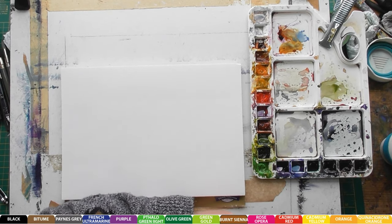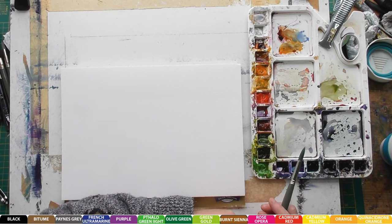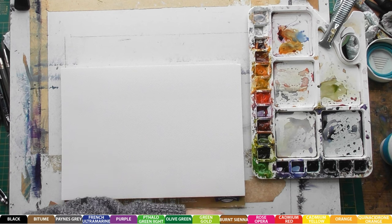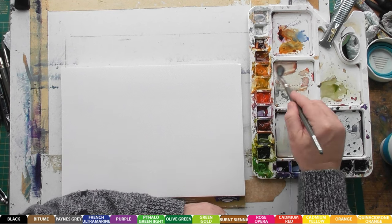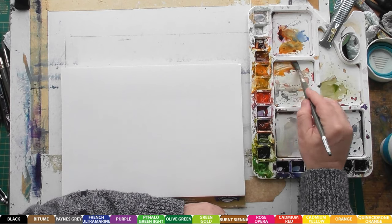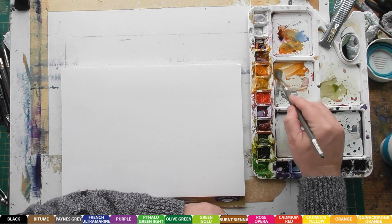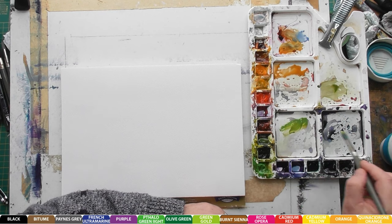First of all, we're going to lay a couple of basic washes down. We'll mix a wash of two different colors - we'll have warm colors or autumnal colors, some oranges there, and we'll have some green on this side.